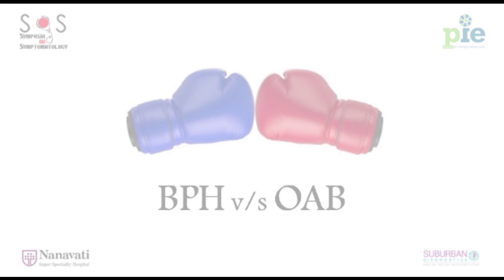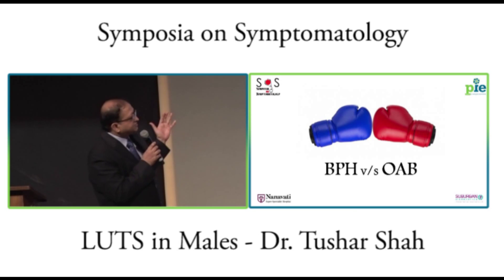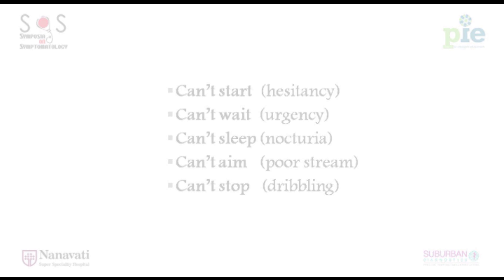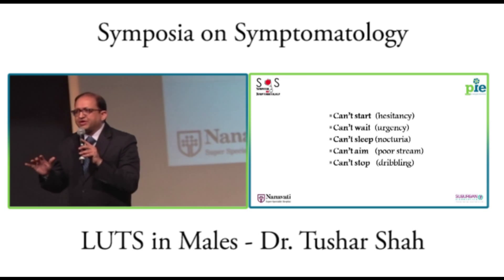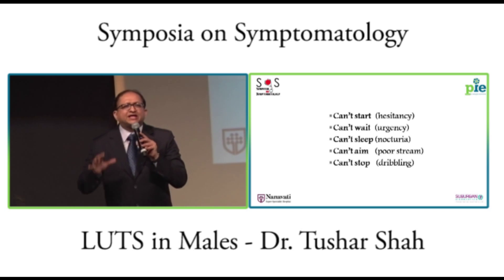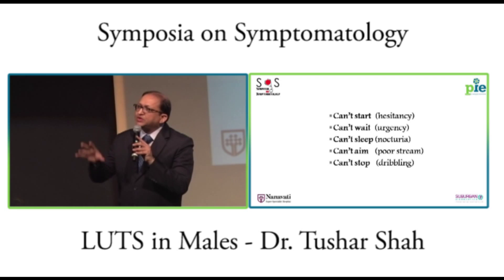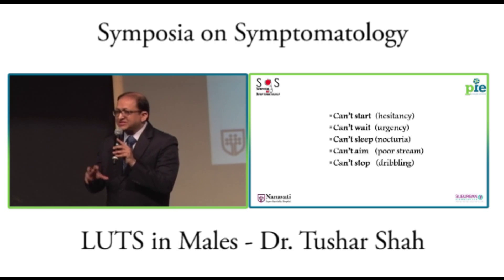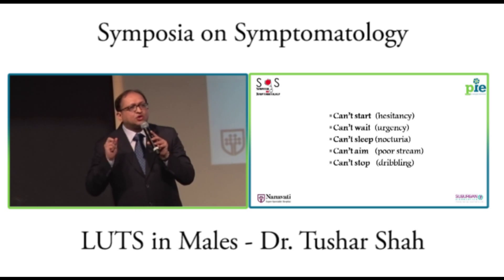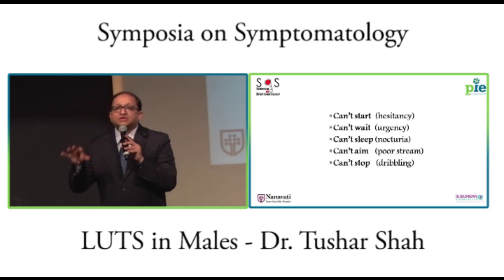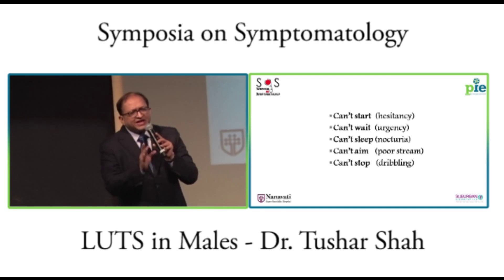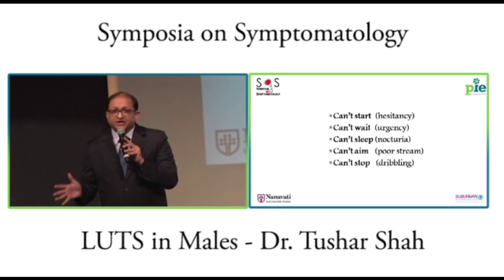The third group is of course symptoms of infection — burning during micturition or pain in the lower abdomen. Now we come to BPH versus OAB. Overactive bladder is usually an idiopathic disorder where, at small volumes of bladder fullness, the detrusor muscle starts contracting. Detrusor overactivity, usually without any reason, occurs in both males and females. Some studies say females have a greater incidence, but males have a very high incidence themselves.